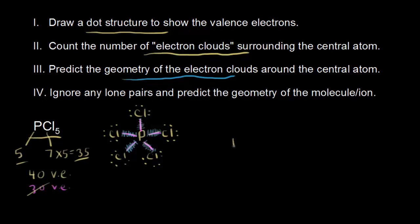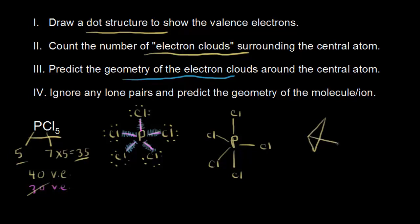Let me draw the molecule in that trigonal bipyramidal shape. We have phosphorus in the center with 3 chlorines in the same plane — called the equatorial positions, like along the equator — 1 chlorine above the plane and 1 chlorine below the plane, called the axial positions. Let me draw a slightly better trigonal bipyramidal shape: one pyramid on top and another pyramid on the bottom.